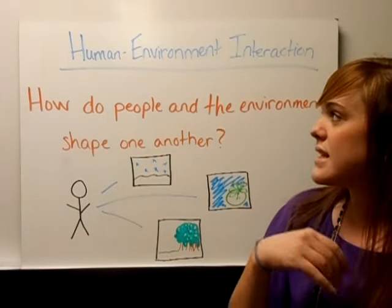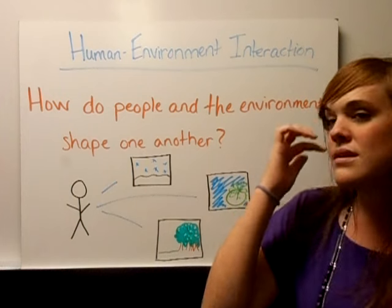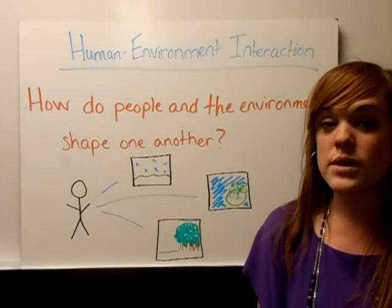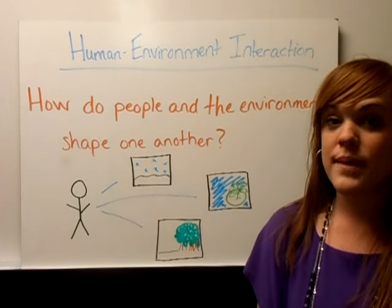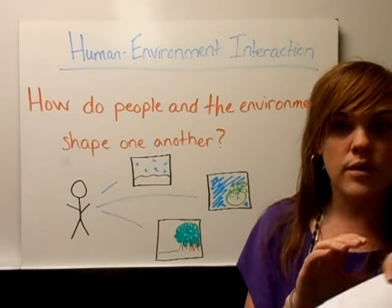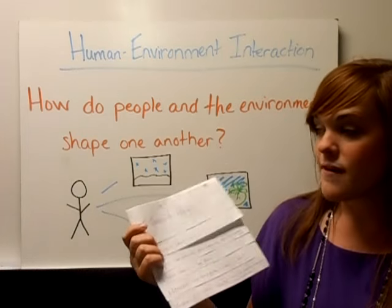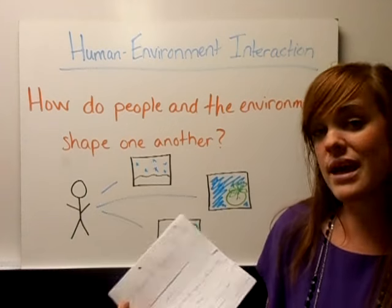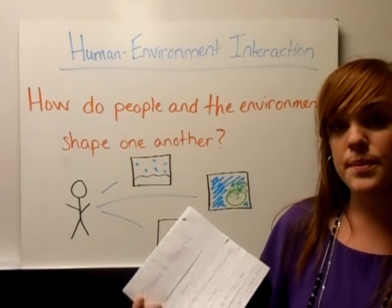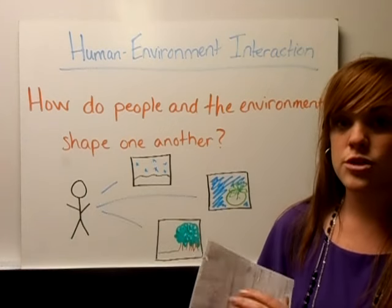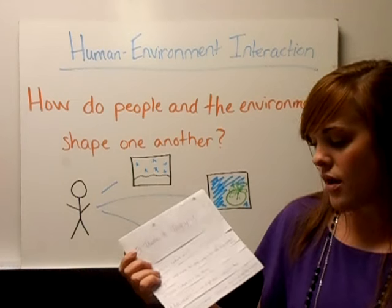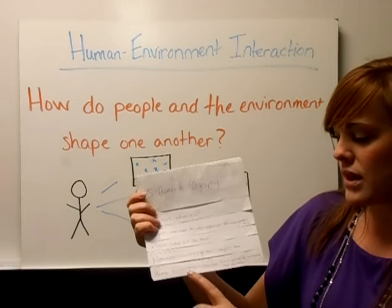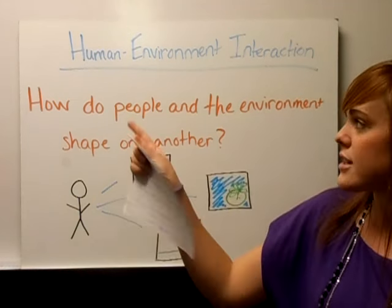This is our last theme of geography. We've done four so far, and this will make the fifth, completing your five themes of geography foldable. I'll tell you what times during the video to pause when I want you to write something down. Right now, pause and write 'human environment interaction.'